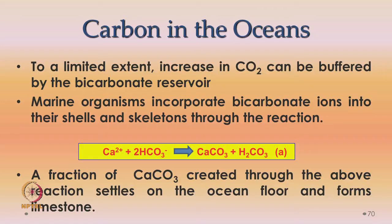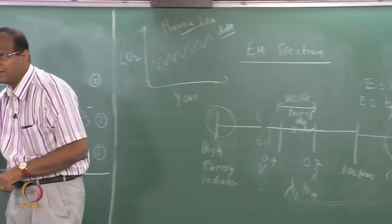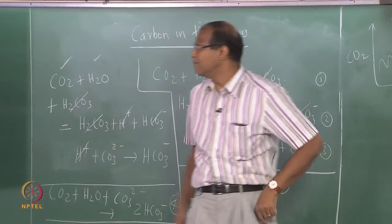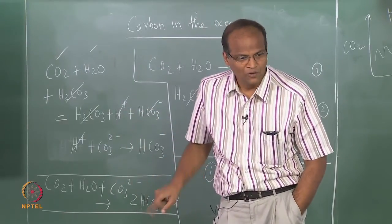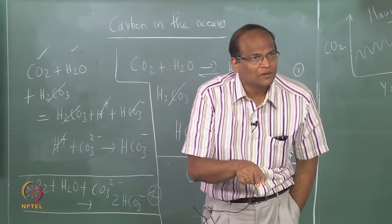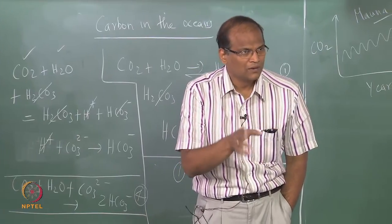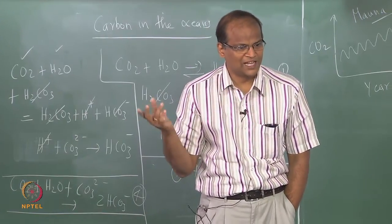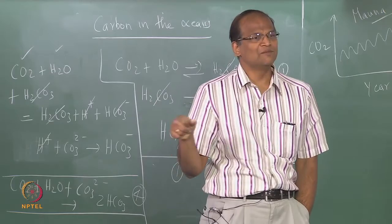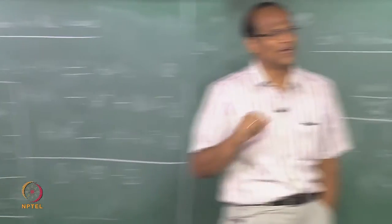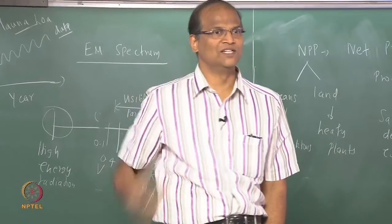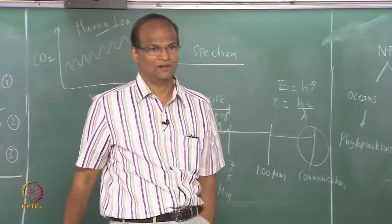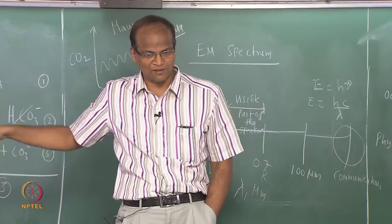The marine organisms incorporate bicarbonate ions into their shells and skeletons. Ca²⁺ reacts with 2HCO₃⁻ and results in the formation of limestone CaCO₃. A fraction of the CaCO₃ created through the above reaction settles on the ocean floor and forms limestone. See how carbon is getting into the system — and then the limestone reacts with carbonic acid again and releases calcium ions through the reverse reaction.